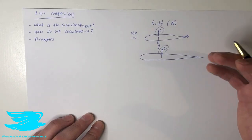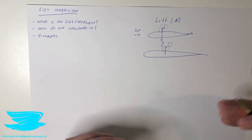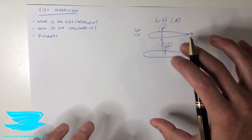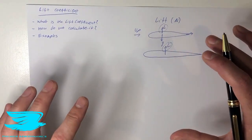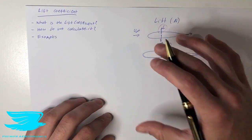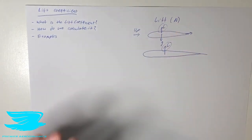So the lift coefficient is a non-dimensional number, which allows us to compare different objects to see which one is effectively producing more lift based on its geometry, instead of just how big it is, or the velocity, or any other parameter.